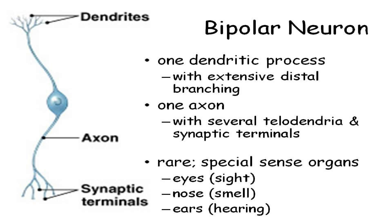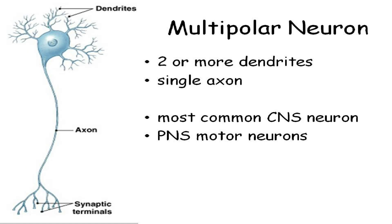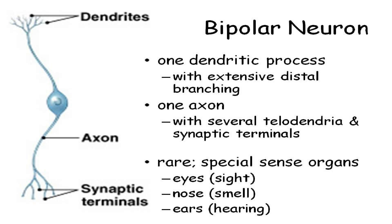Bipolar neurons — people with bipolar disorder don't have more of these. Bipolar: 'bi' means two. Because here's the soma, and there are two things coming off the soma, one coming off each side. Whereas in a multipolar neuron you've got a whole bunch of things connected to the soma. That's why it's called multipolar. Bipolar has just two processes touching the soma.